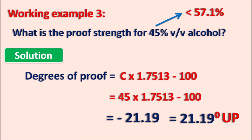According to the British Pharmacopoeia, alcoholic concentration is expressed in degrees of proof, by which we can estimate the excise duty that can be levied on the alcoholic preparation. That concludes the calculation of proof spirit.